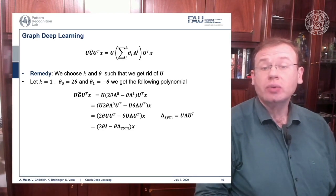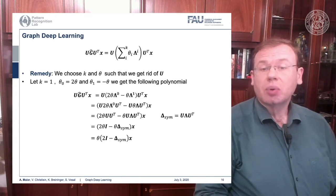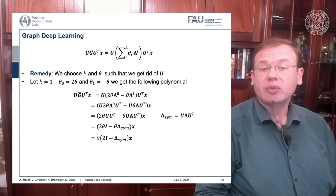And you see now U is suddenly gone. We can pull out theta again and all that remains is 2 times the identity matrix minus the symmetric version of the graph Laplacian.